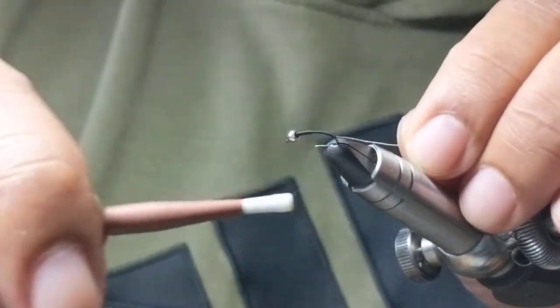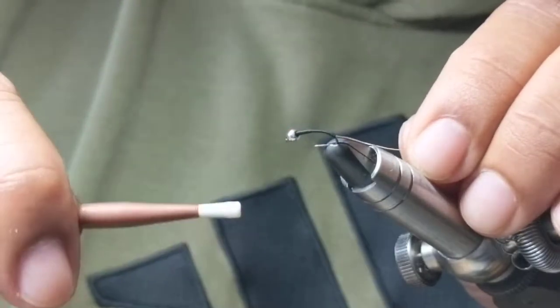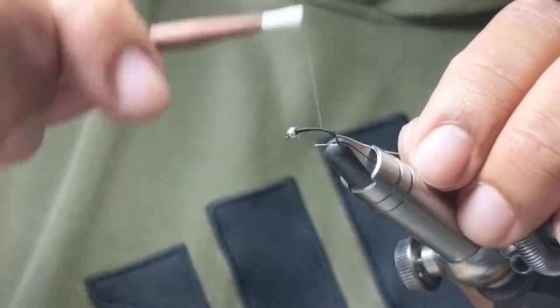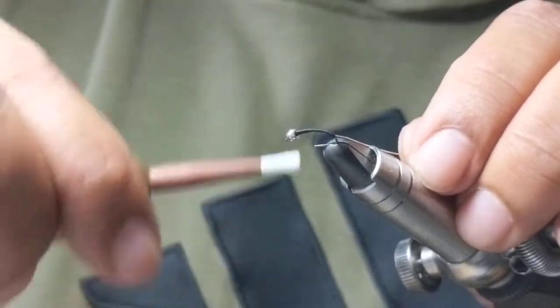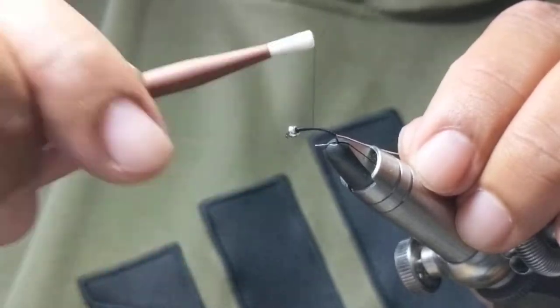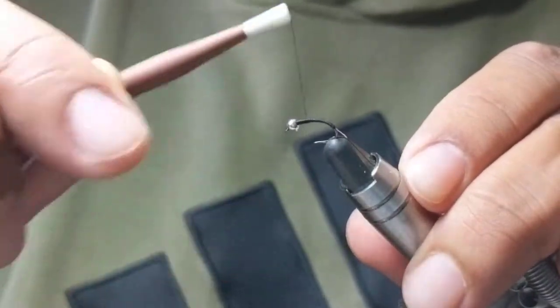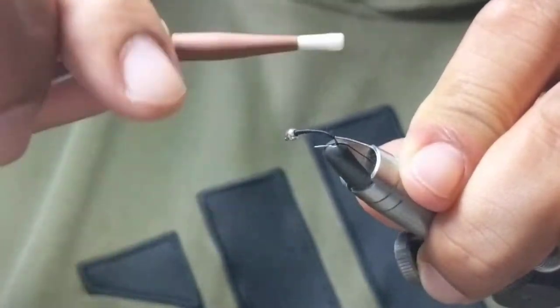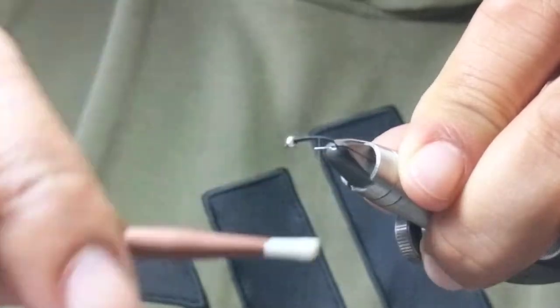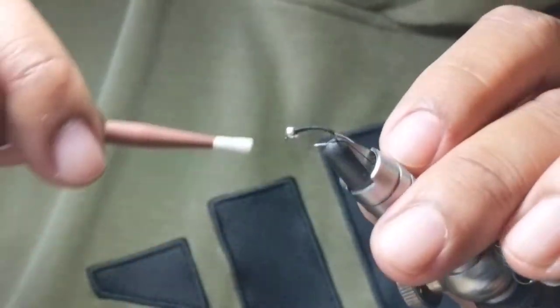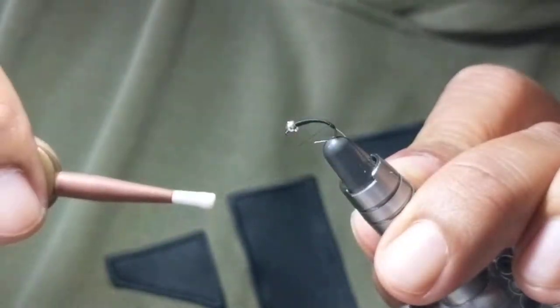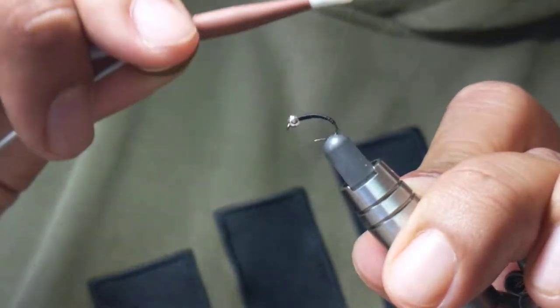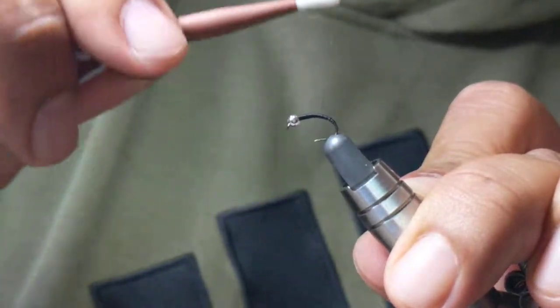At this point, if you use thicker thread it wouldn't be as many wraps, but to me this is probably the most important part of building this fly because you're building the shape of the fly. This is that profile I was talking about earlier.